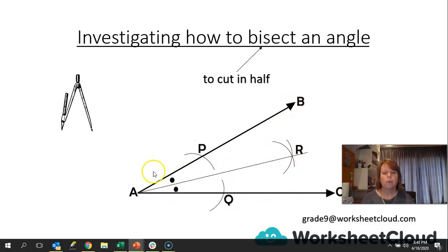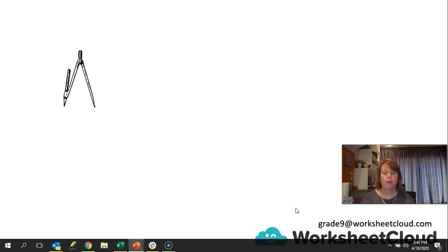And we get two angles, BAR and RAC as being equal. Let's look at another angle. This time, we're going to use our protractor again to bisect the angle, which is a 90 degree angle. And we're going to call this angle EDF. Okay, D being the vertex.